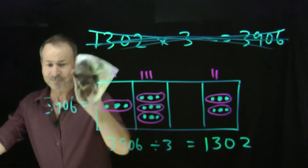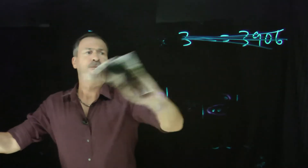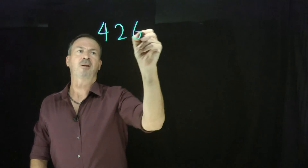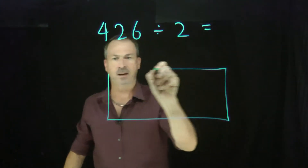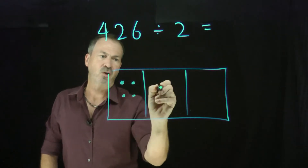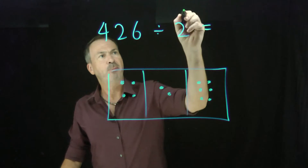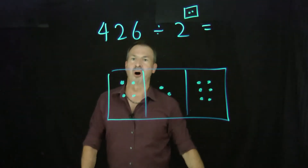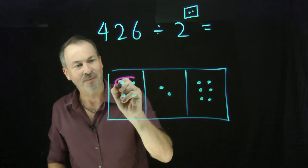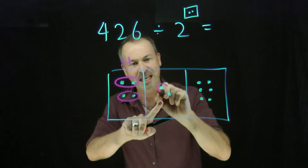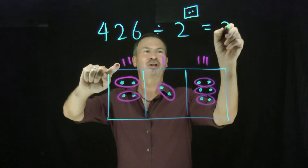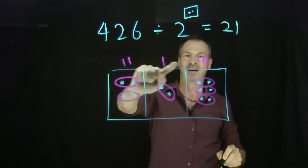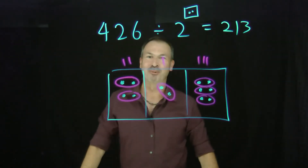Let's do another example: 426 divided by 2. I think the answer is going to be 213, but let's see it. We're asking what got doubled to give this answer. Let's draw 426 — it's 4 hundreds, 2 tens, and 6 ones. I'm looking for things that got doubled, so I look for pairs of dots. There's a dot that got doubled at the hundreds level, a dot at the tens level got doubled, and dots at the ones level got doubled. I can see that 2 dots at the hundreds level, 1 dot at the tens level, and 3 dots at the ones level got doubled to give the answer 426.